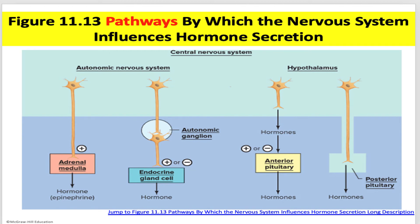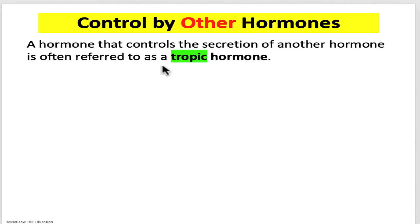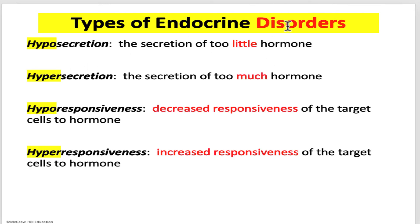Some hormones trigger other cells to release other hormones. There is a special name for these prior hormones — they're called tropic hormones. A hormone that controls the secretion of another hormone is a tropic hormone. Let's look at some disorders of the endocrine system. Some terminology is very important: hypo means not enough; hyposecretion is the secretion of too little hormone; hypersecretion is the secretion of too much hormone.